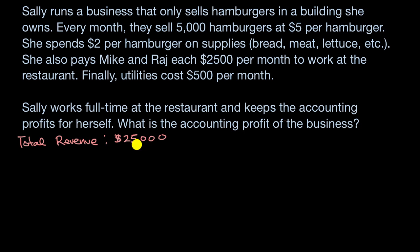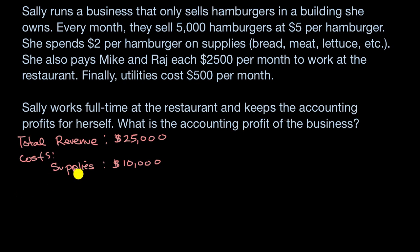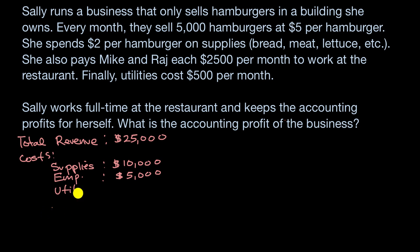Now let's think about the costs. First, the cost of her supplies — often referred to as cost of goods sold. That would be 5,000 hamburgers times $2 per hamburger, which is a $10,000 cost. Then she has the cost of her employees: two people at $2,500 per month each, so that's $5,000. And last but not least, she has her utilities at $500 per month.